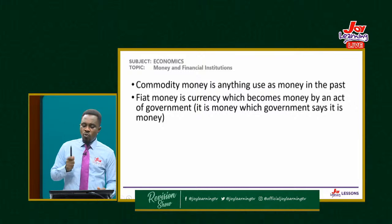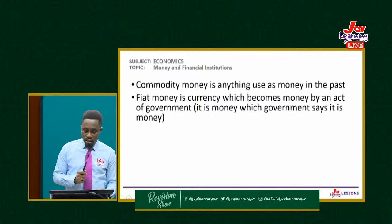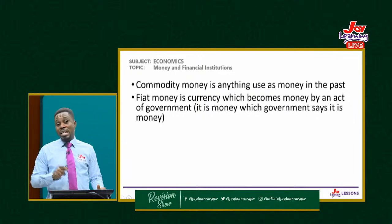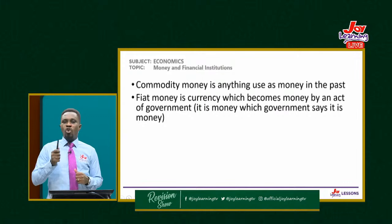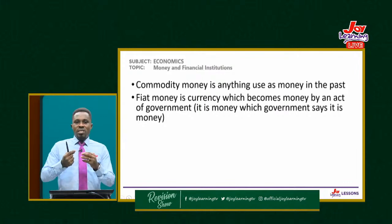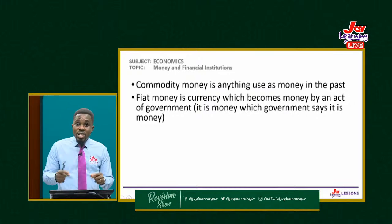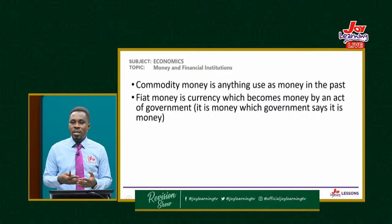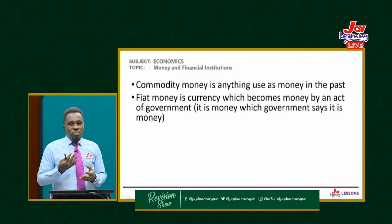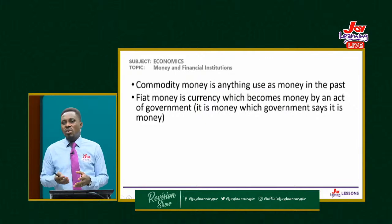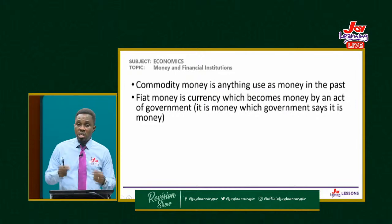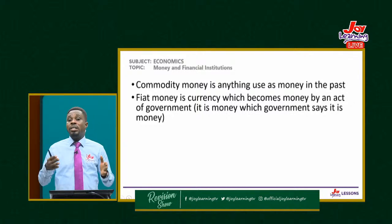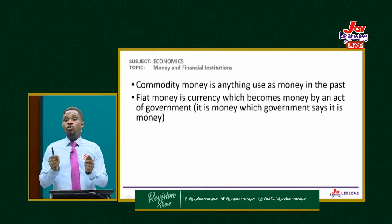Fiat money is currency which becomes money by the act of government. It is money which government says is money — a famous quote: 'Fiat money is money because government says it is money.' Designs were made in the form of notes and coins and authorities declared this is money, and we all accepted it. In modern times, the money we have largely describes modern fiat money — the dollar, the cedi, the pound, the euro — all designed by government authorities.